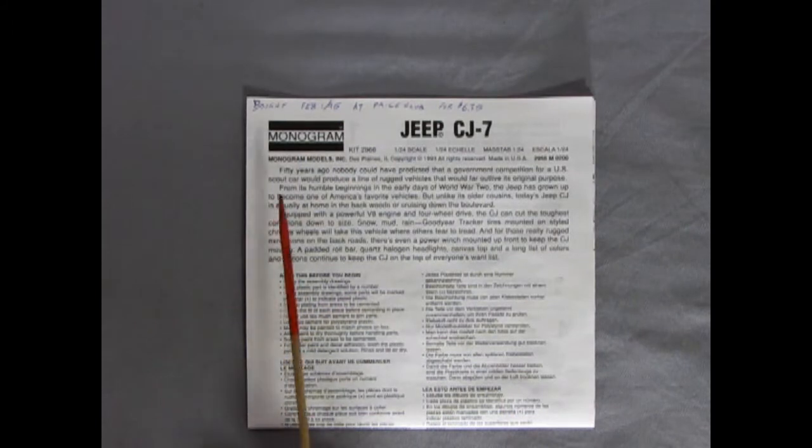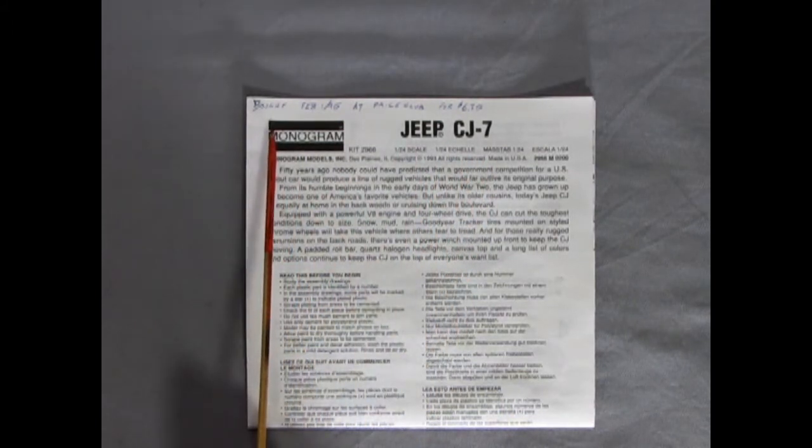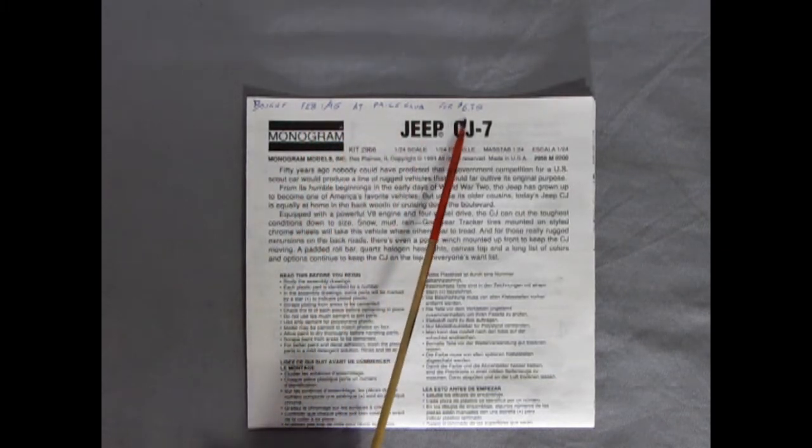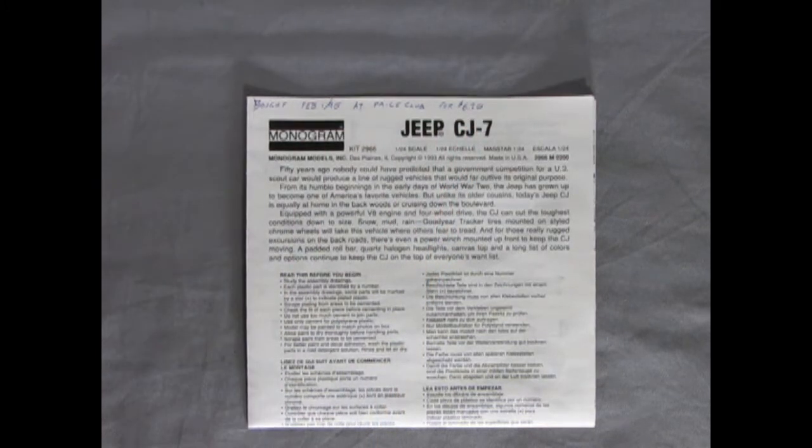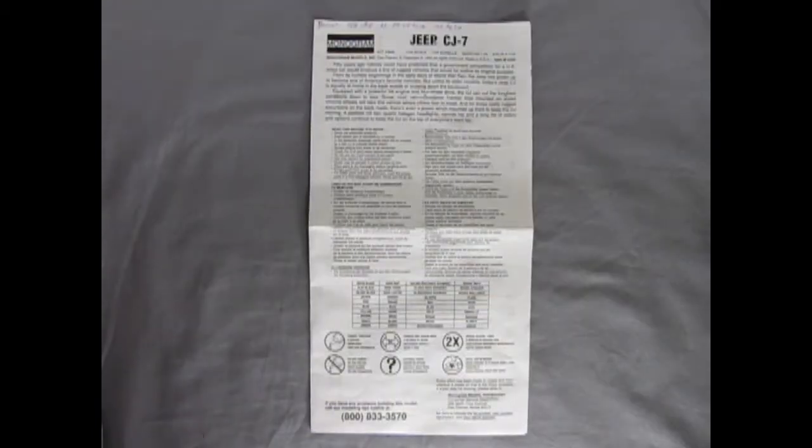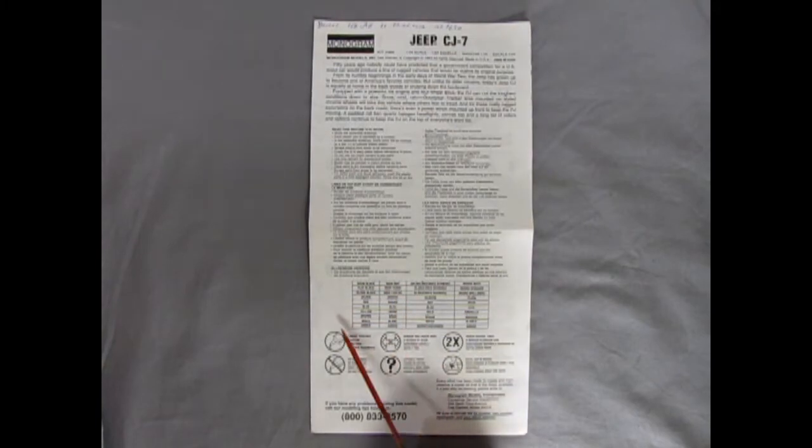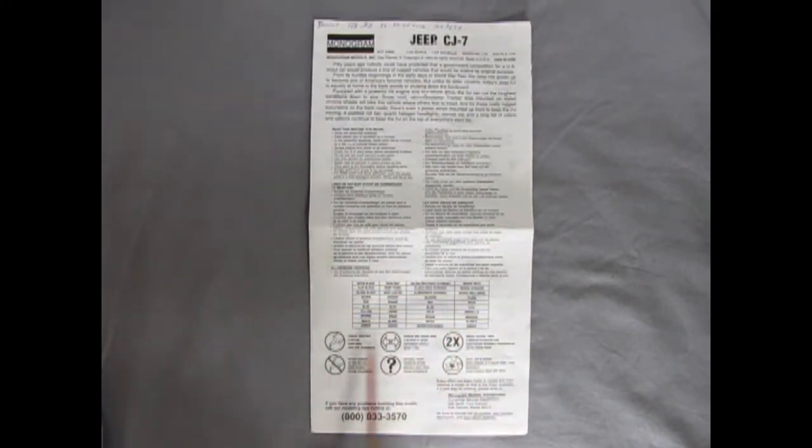Here we have our instruction sheet from the Monogram Jeep CJ7. I bought this a very long time ago, February 1st 1995 at a place called Price Club for $6.95. If you were to get this model kit today it would at least be $38 Canadian. The instruction sheet unfolds just like a map with a paint chart and the symbols needed to build this kit.